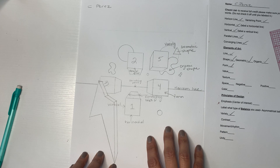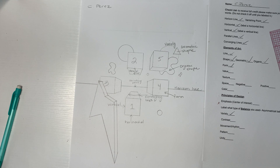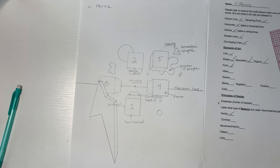As we start drawing from observation, I'm always going to ask you to look at the negative shape of the things you're drawing, because sometimes it's just easier to draw the negative shape around something than it is to draw the thing itself.